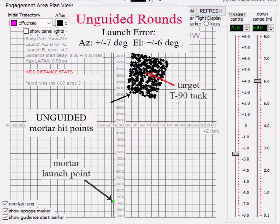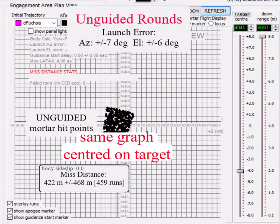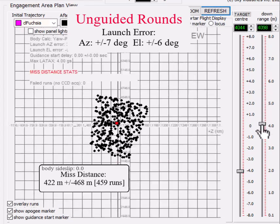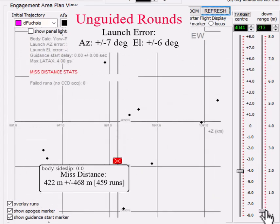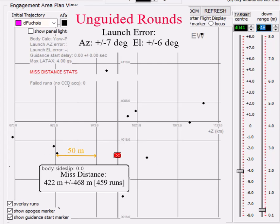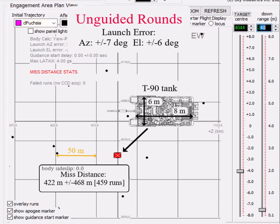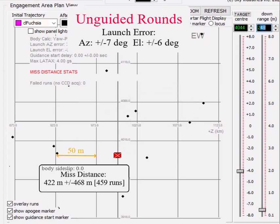The hit points form a square-sided patch on the ground centered on the target. Now let's center the graph on the target so we can zoom in for a closer look. Bottom line, the unguided rounds just don't hit anything. The mean missed distance is 420 meters plus minus 468 meters in 459 runs.